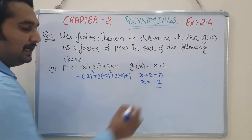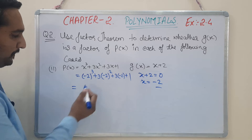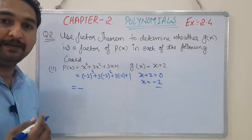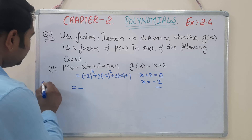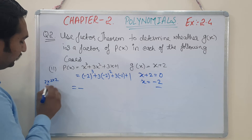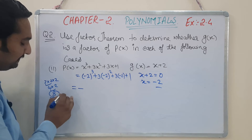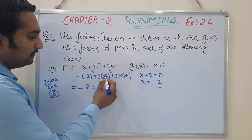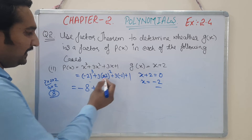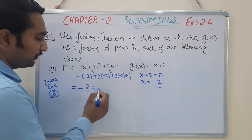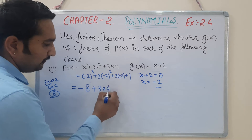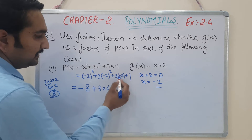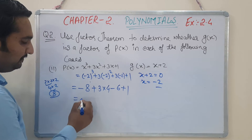Wherever x appeared, we substituted -2. Since the cube has an odd power, the sign remains minus. 2³ = 2×2×2 = 8, so we get -8. Where there is a square, minus converts to plus. 2² = 4, so 3×4 = 12, giving +12. Then plus-minus converts to minus: 3×2 = 6, giving -6. Plus 1.